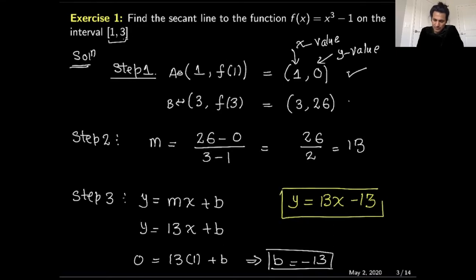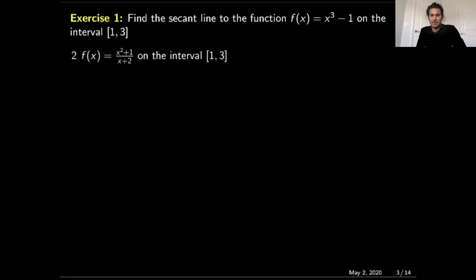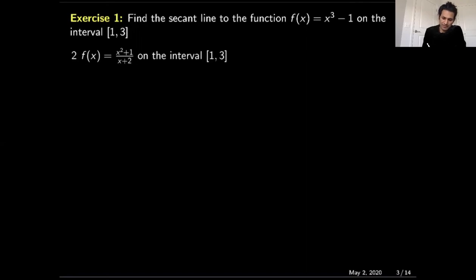So this is our equation of the secant line. Let's practice this concept on one more example. Here I have the function f(x) = (x² + 1) / (x + 2) on the interval one to three. Again, we will begin with step number one.